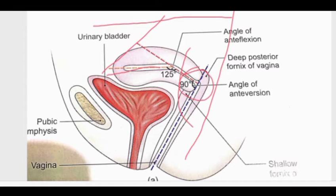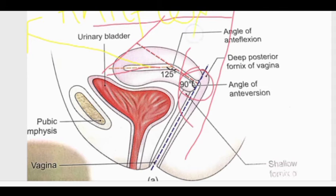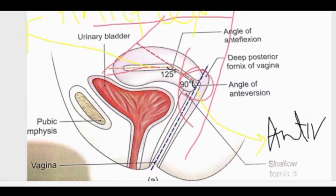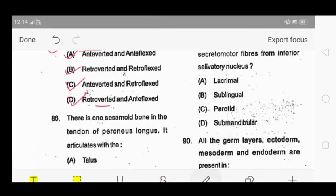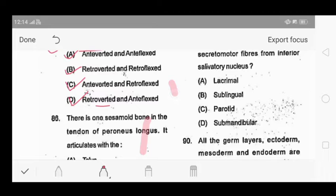In the diagram, one line indicates antiversion and another line represents anteflexion at 125 degrees. So our answer is option A: anteverted and anteflexed as the normal position of the uterus.